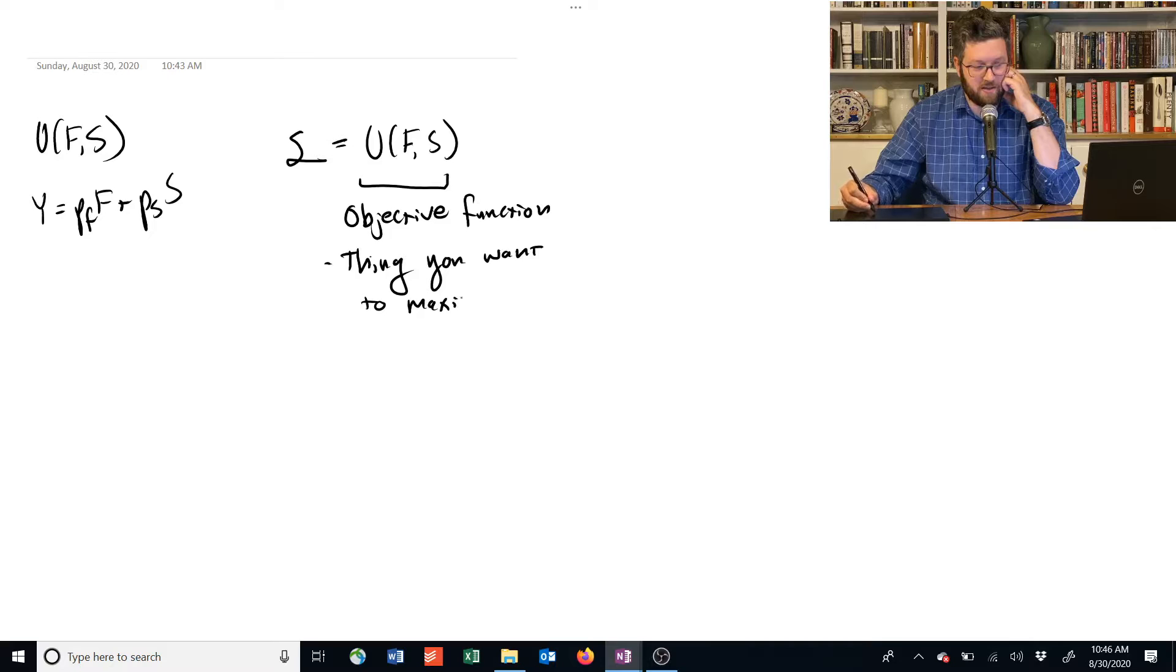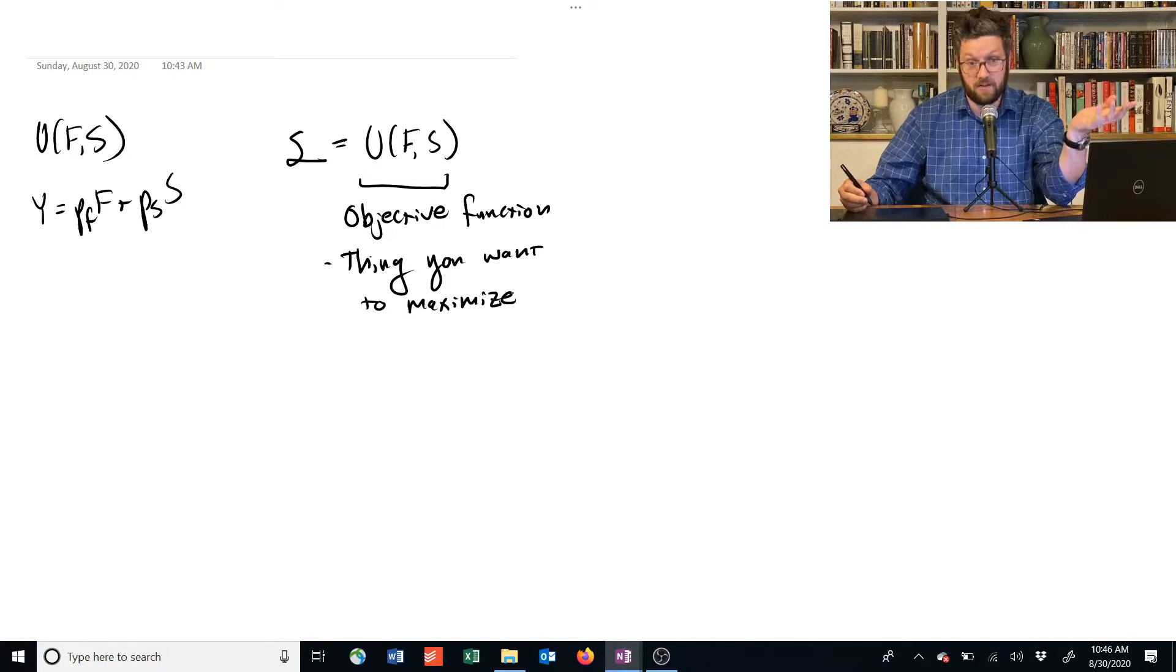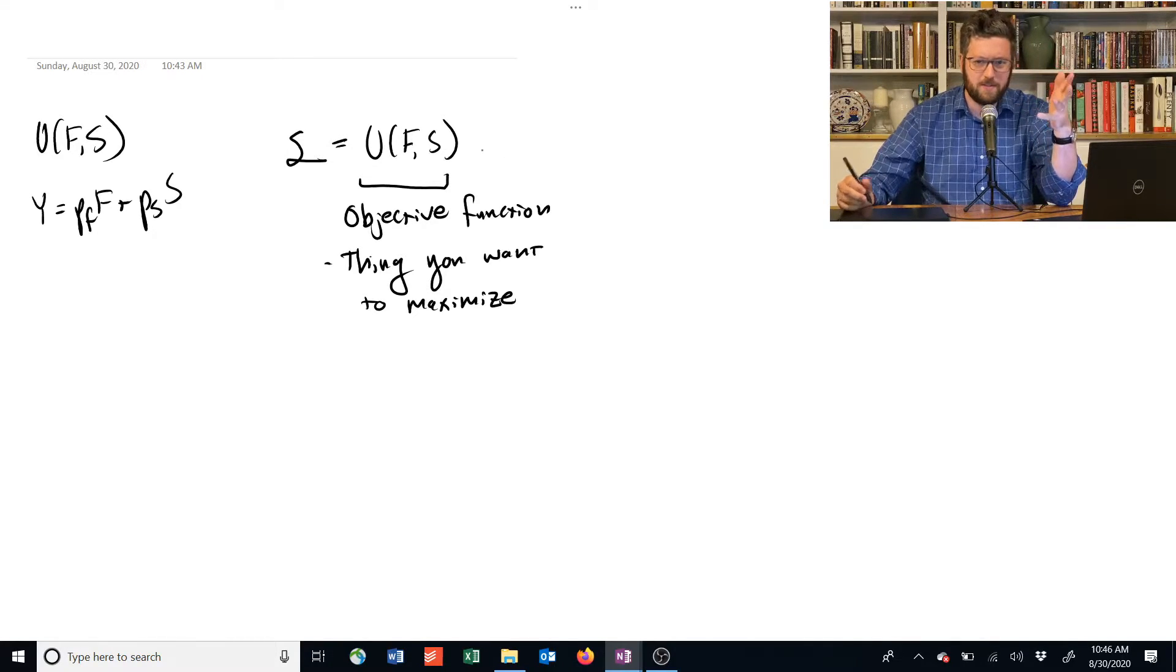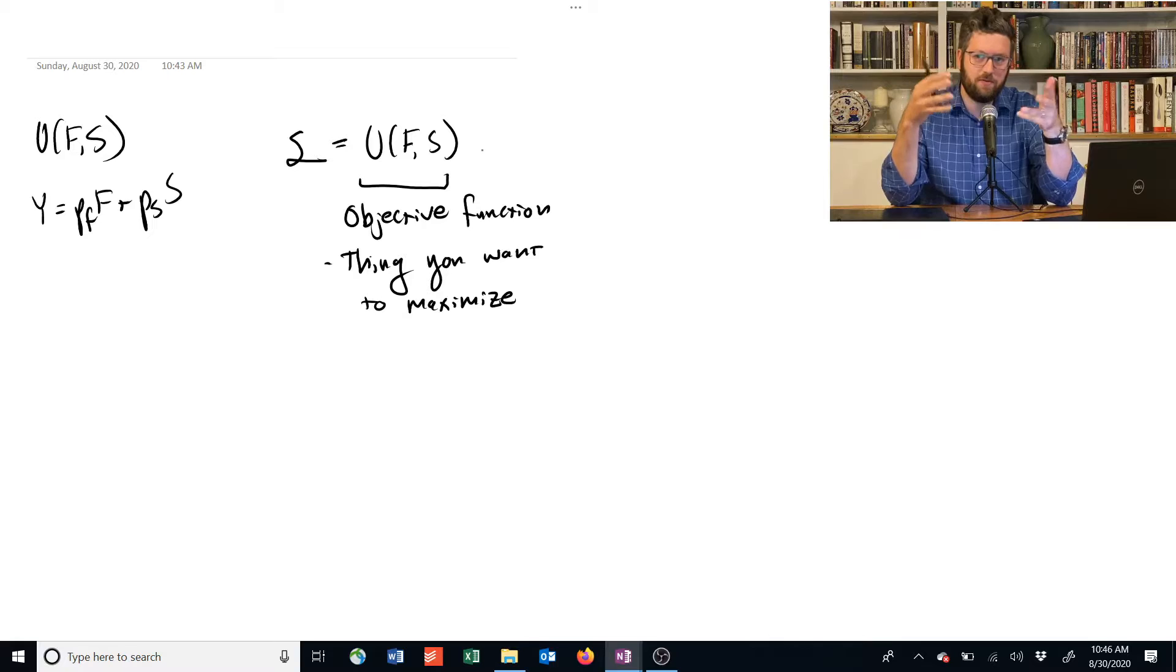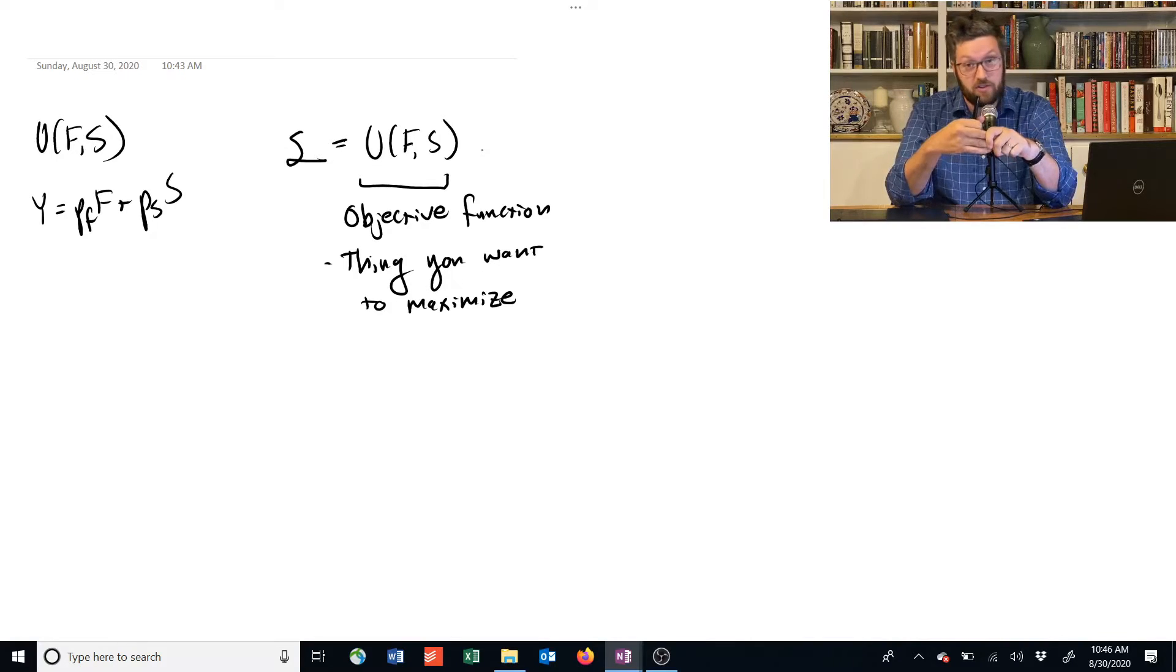So we want to maximize utility. So that's our objective, and that's the first part of a Lagrangian equation. Now, we can't just leave it at that. We can't say how much food and shelter should you consume to maximize your utility, because the answer we'll get